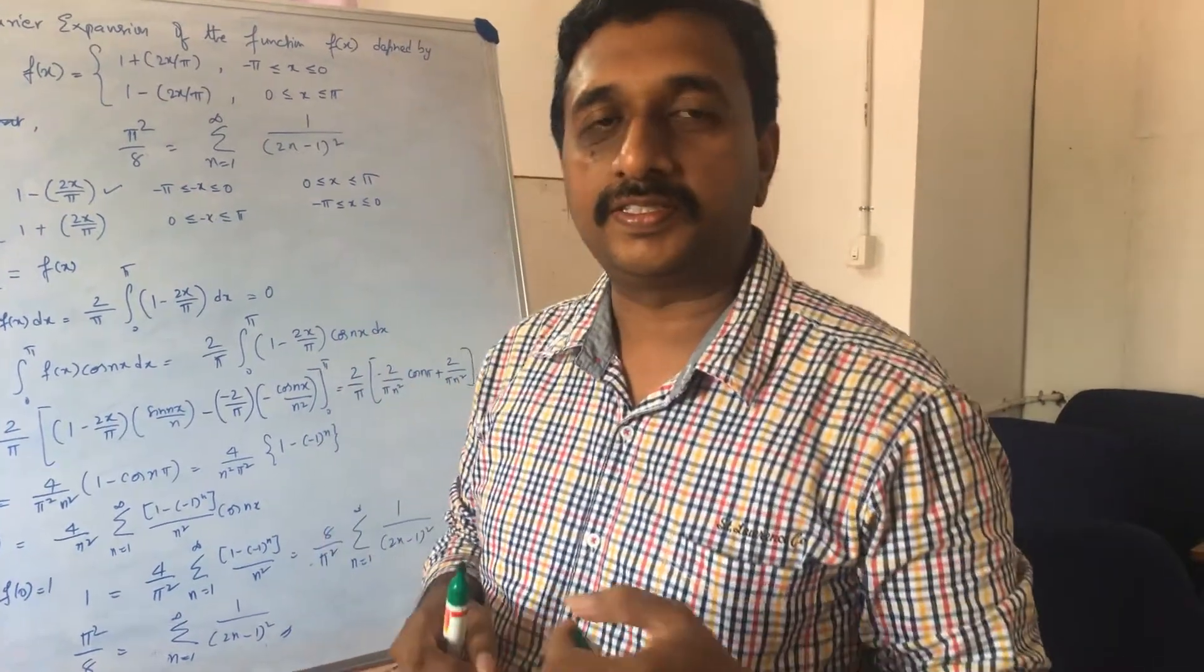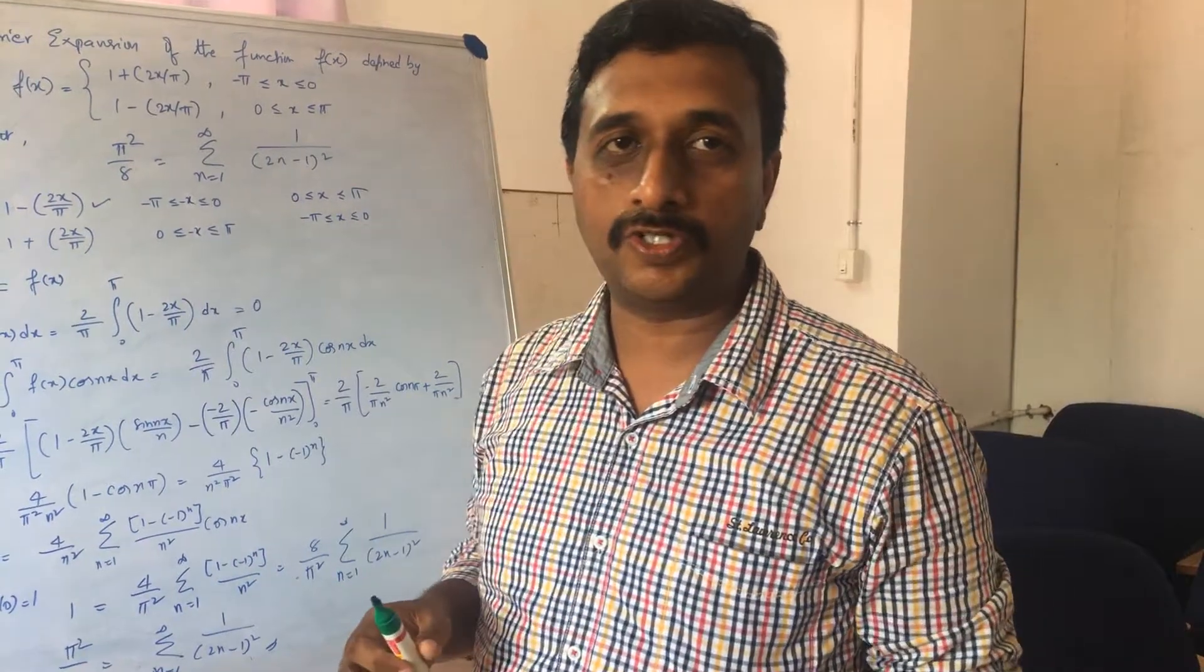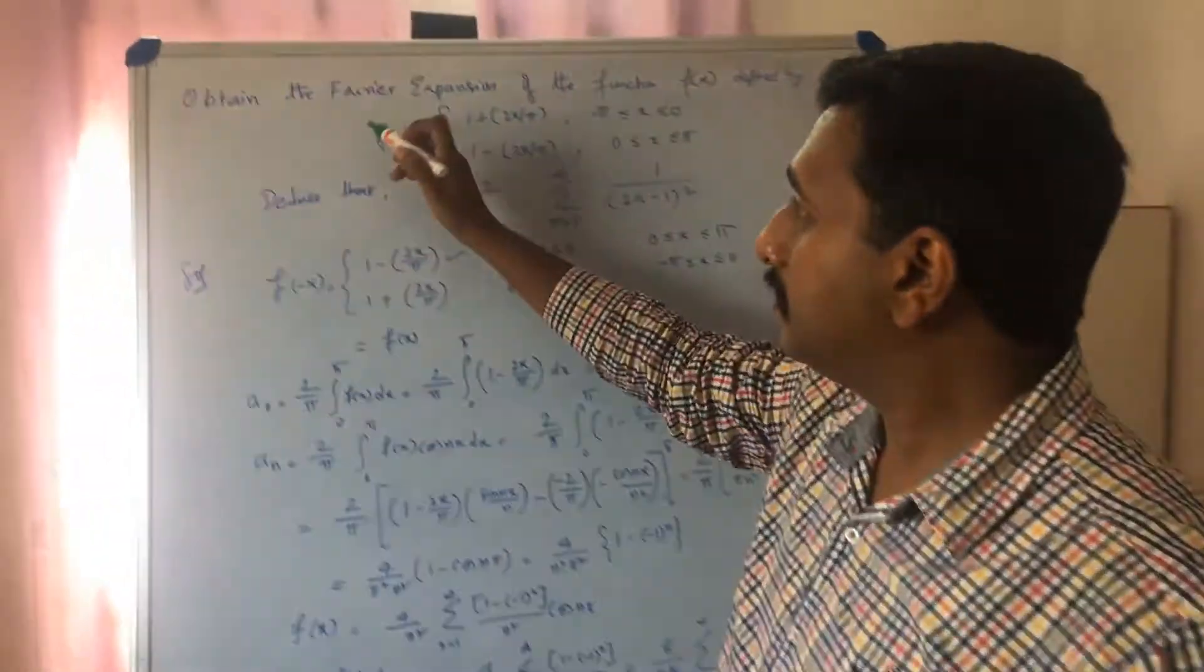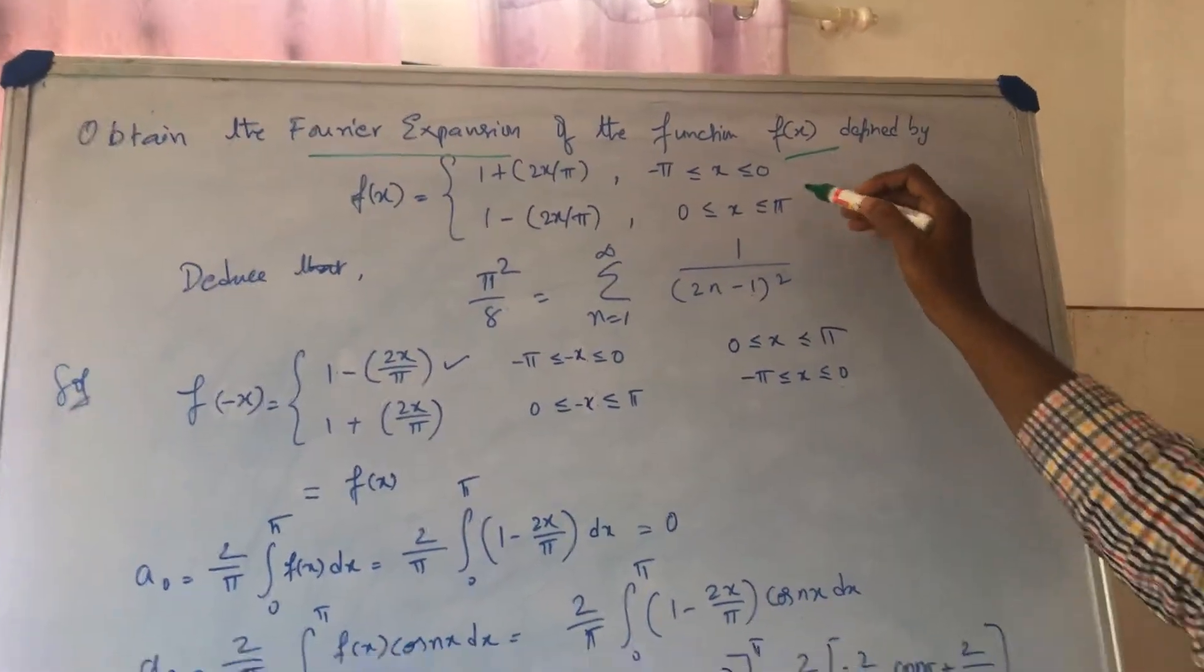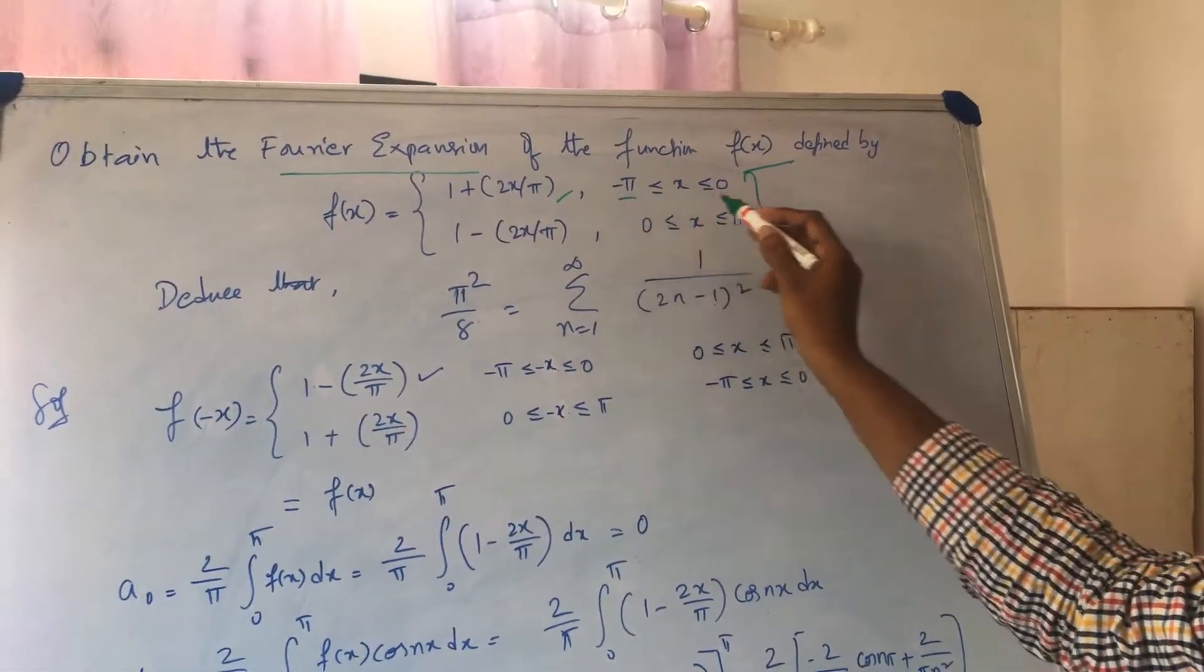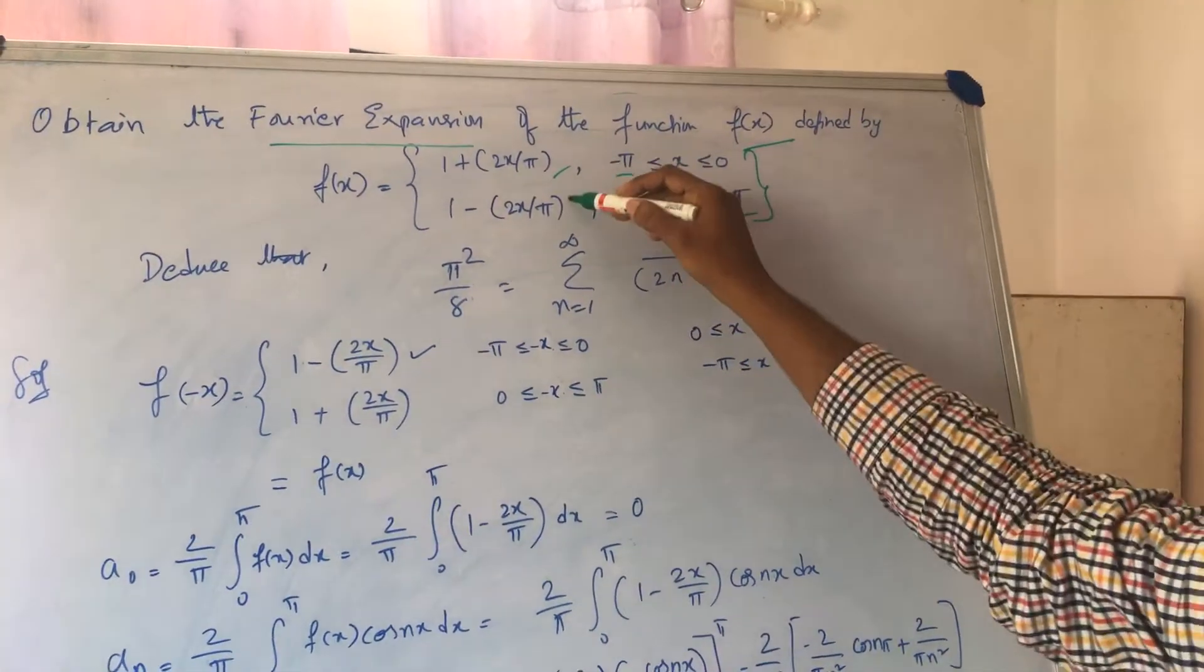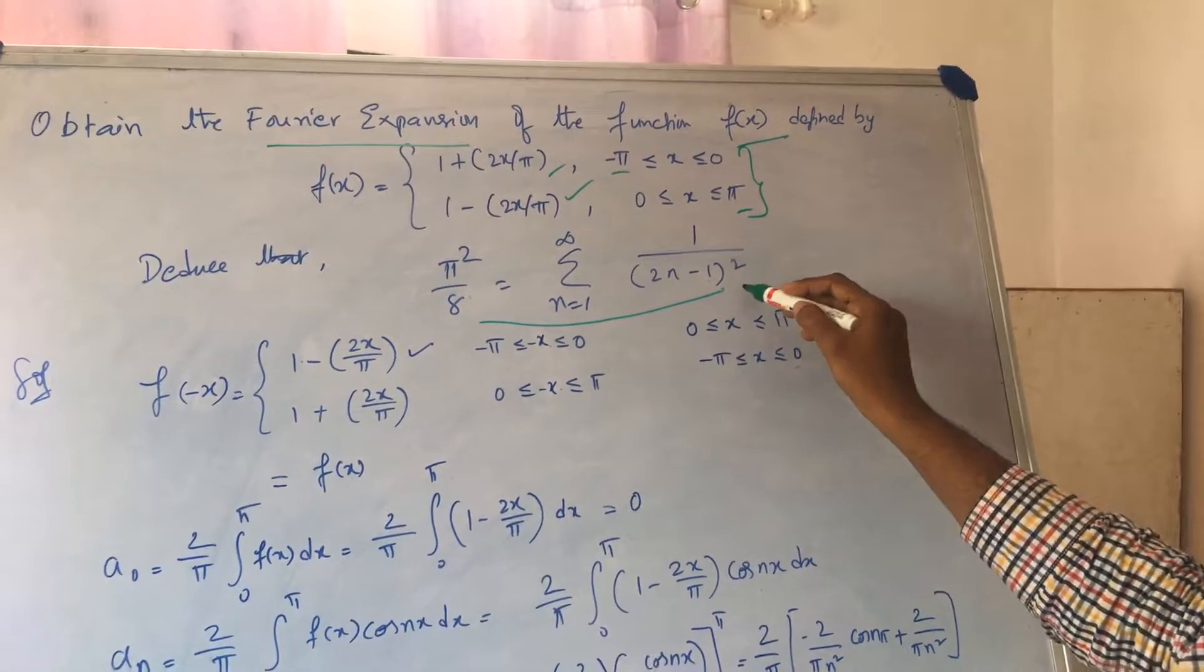In this problem, I will be discussing a Fourier series problem and its solution. We have a Fourier series expansion for a function from minus π to π. You have two functions and then you have to deduce that in this form.